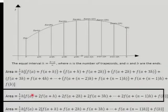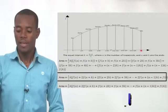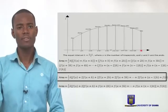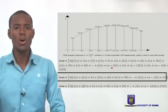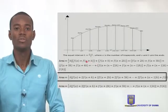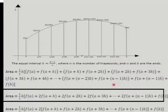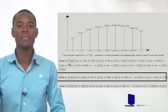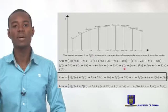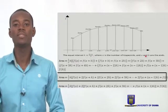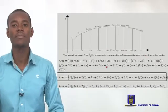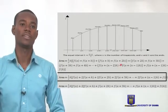You're going to have an expression that has F of A, then 2F of A plus H, and so on, until we get to the last value which is F of B, and that doesn't recur. The good thing about the trapezoid rule is there's just a simple trick: the first term has a coefficient of 1, the last term also has a coefficient of 1, and all the terms in between have coefficients of 2.